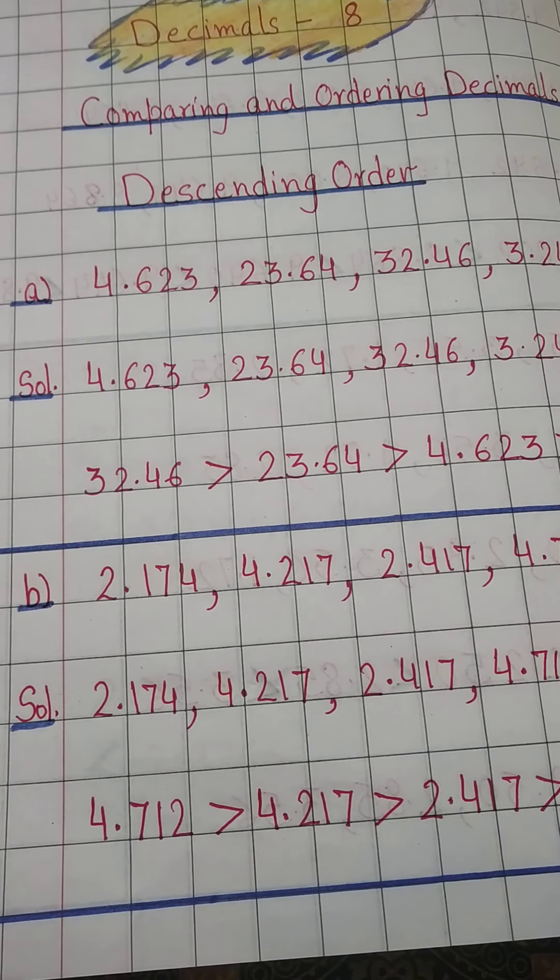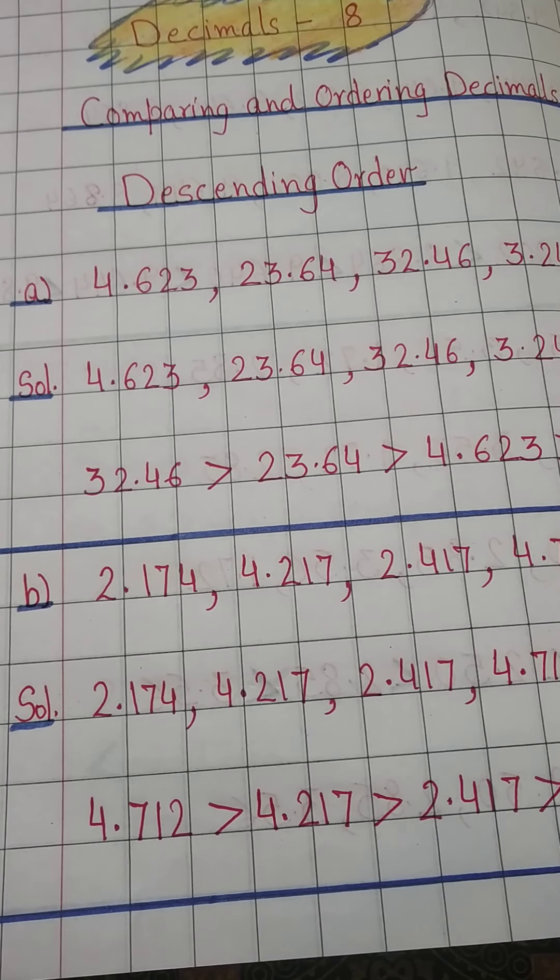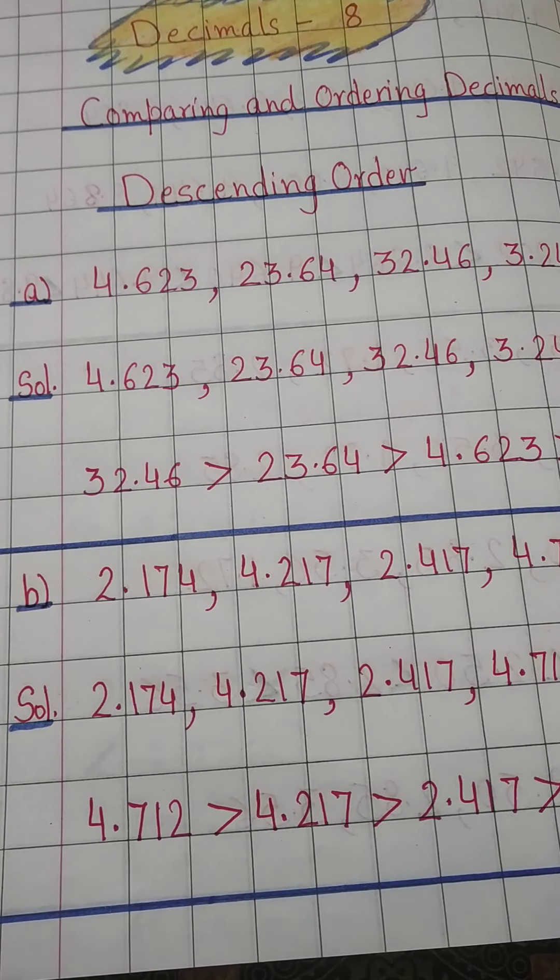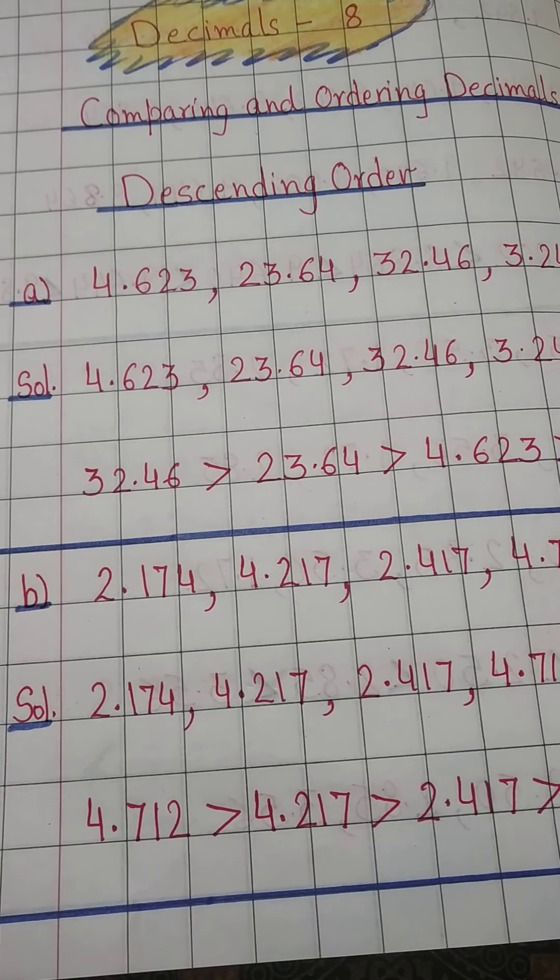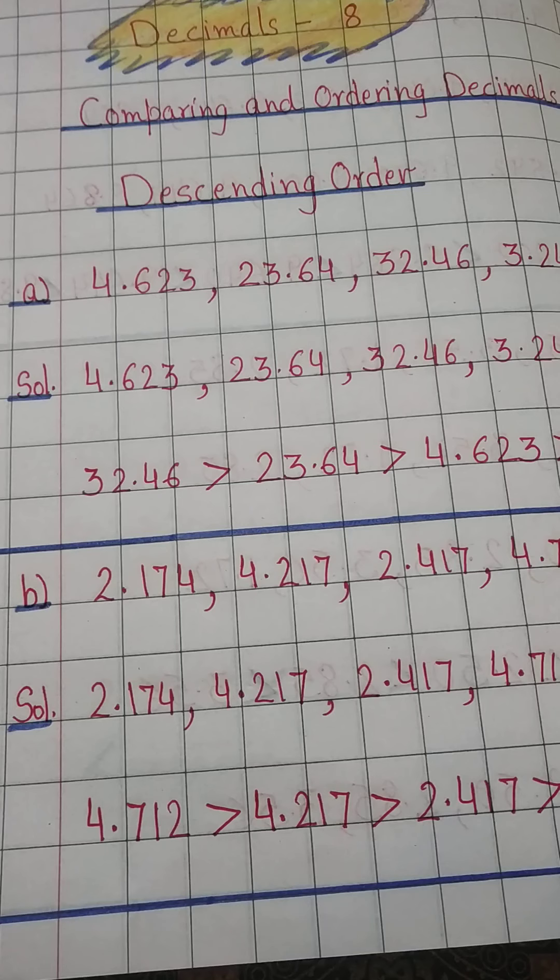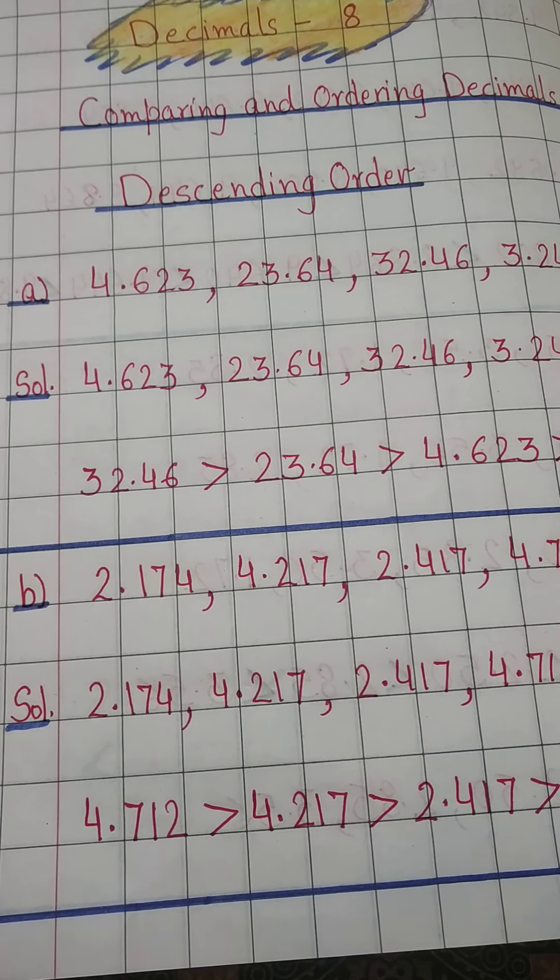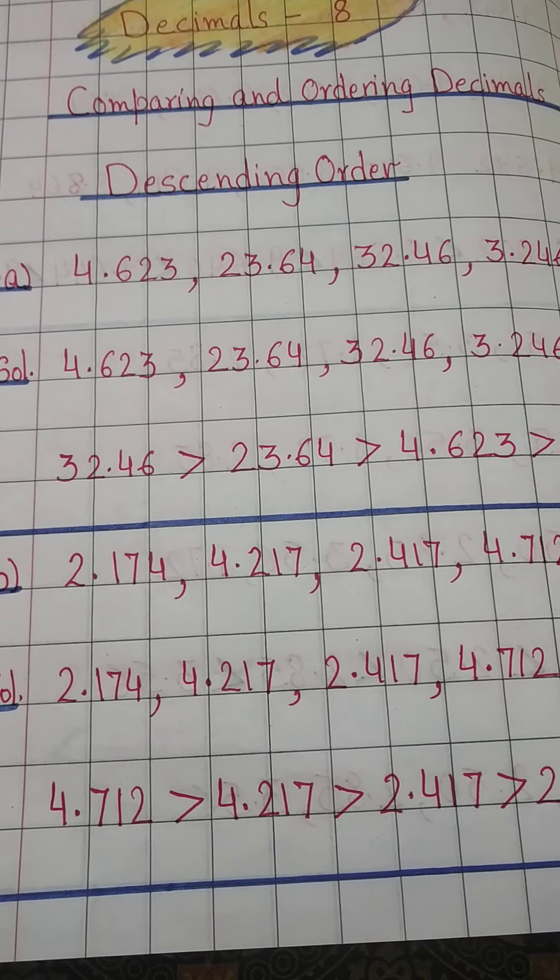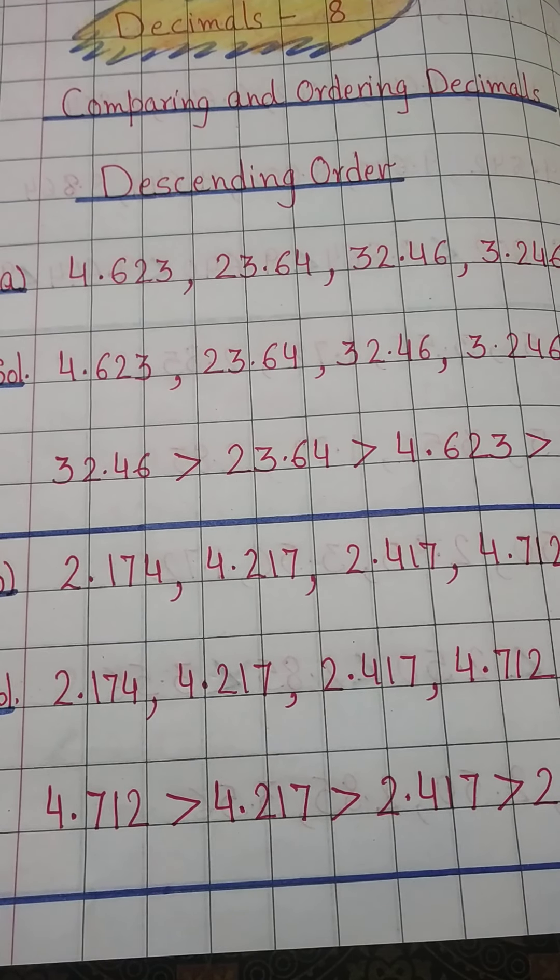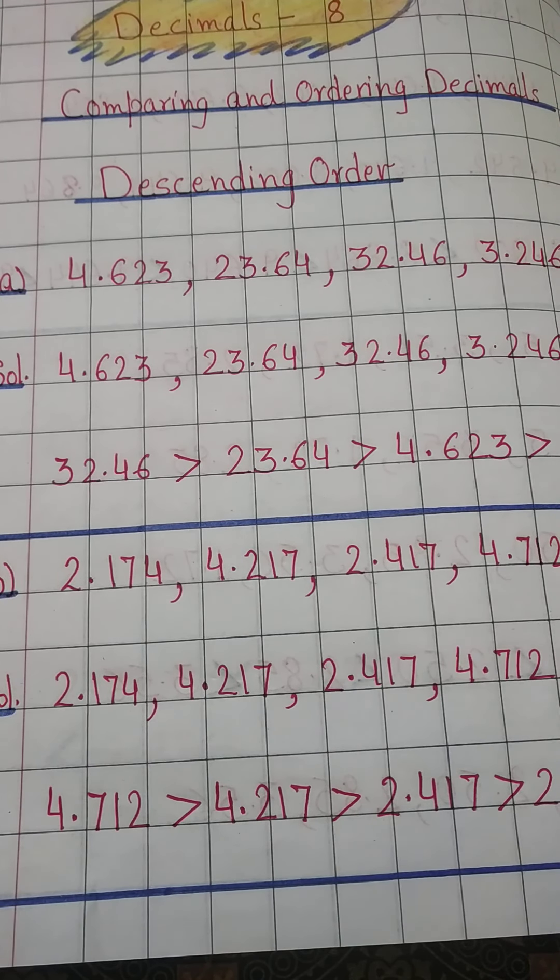Today we will do descending order. If you have understood comparing decimals, you can easily write them in any order, whether it is ascending or descending. But be clear about what is descending order and what is ascending order. Descending order means decreasing order. It is also called decreasing order.